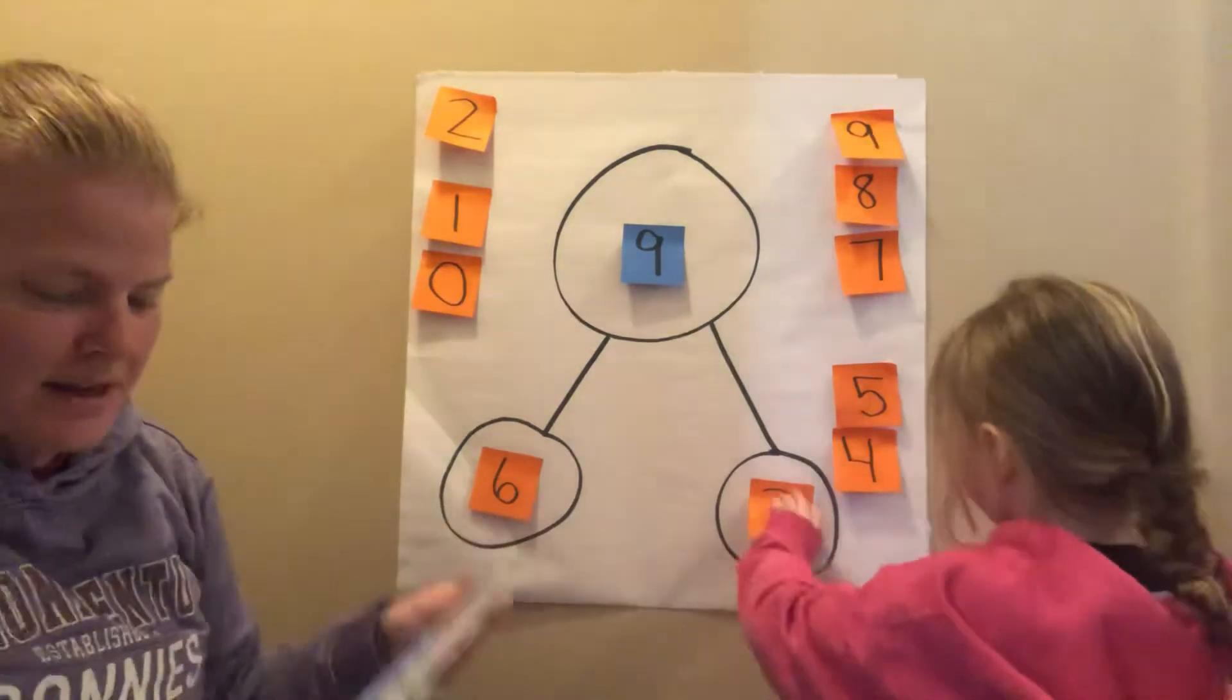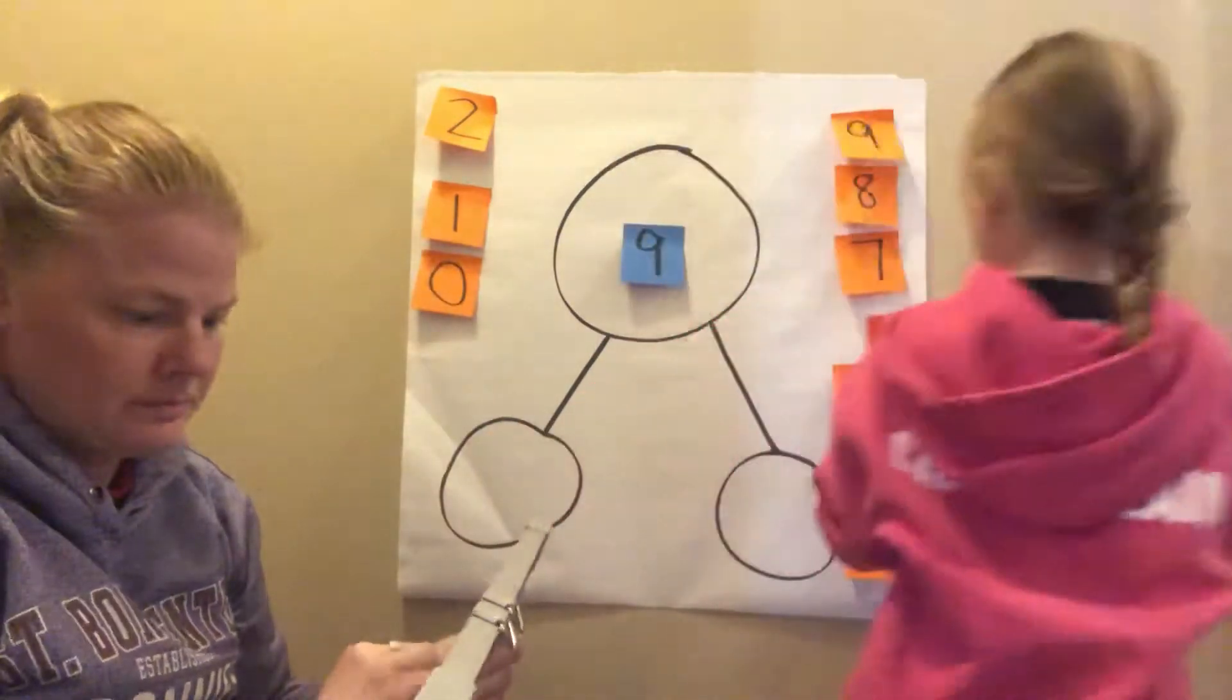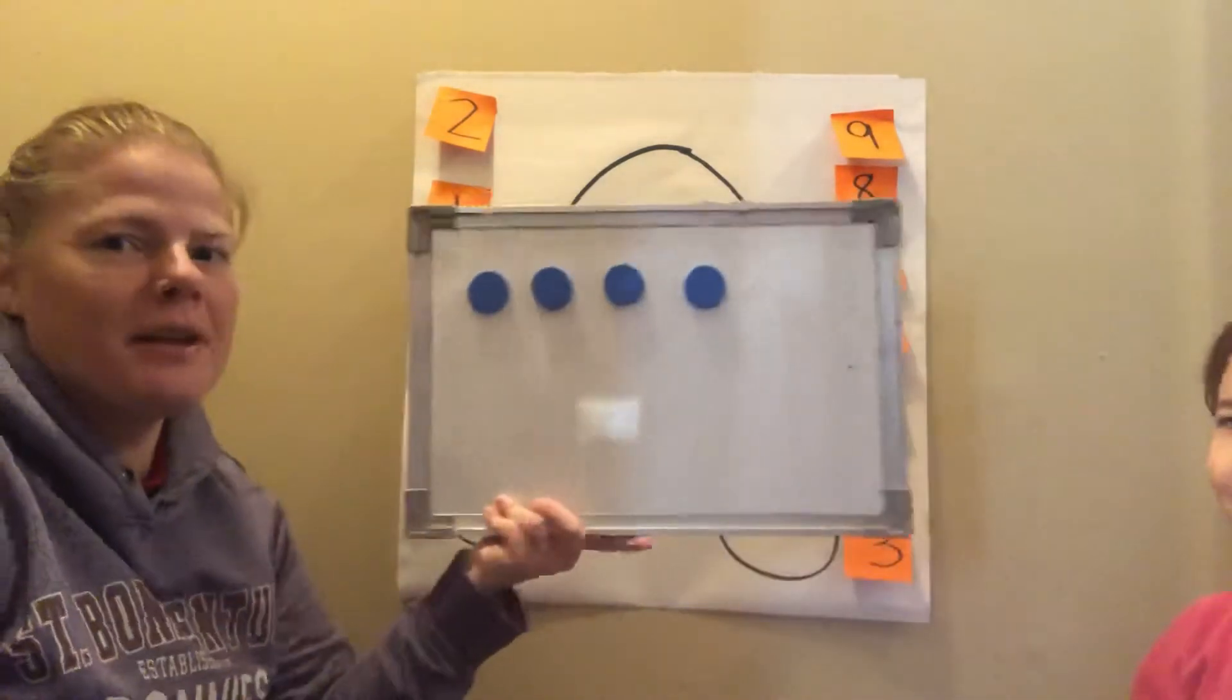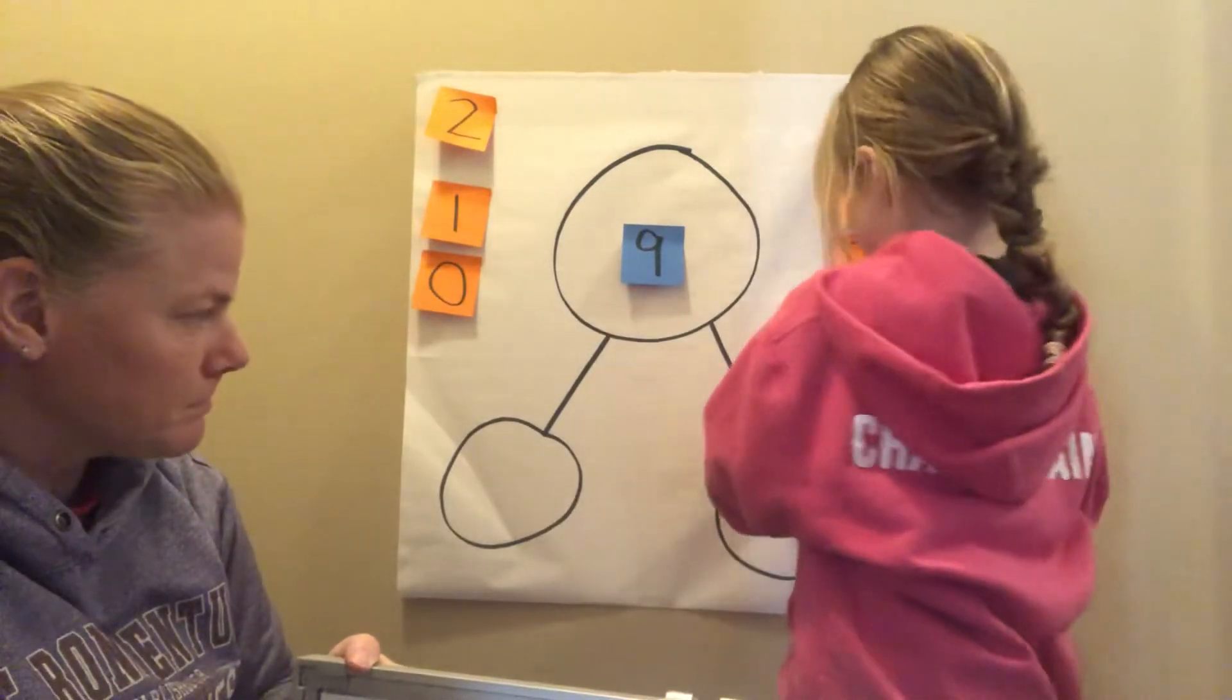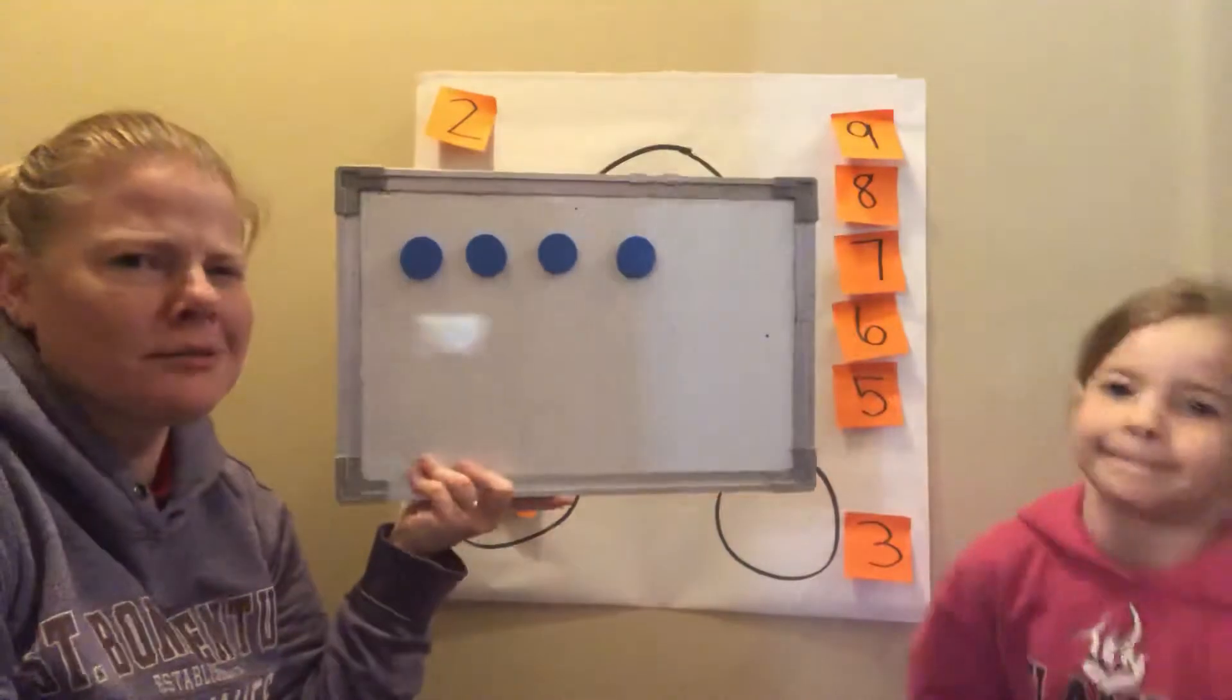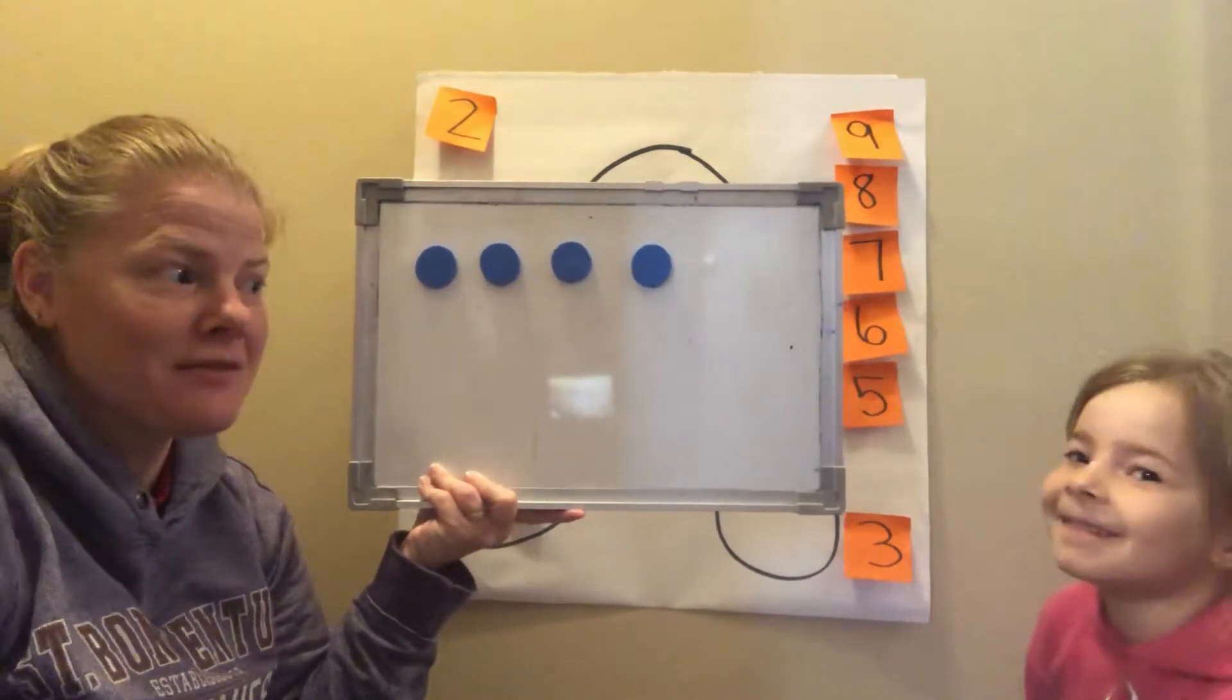All right Shelby, you take those off while I take some of these counters off. Remember we're starting with nine. All right, so we're starting with nine. Are you ready Shelby? Yep. So how many do we see? Four. Four. All right, so she's gonna put up four. So four and some other number gonna give me that nine. So four. How many do you think Shelby are missing? She thinks five. Let's see if she's right. Are you ready?